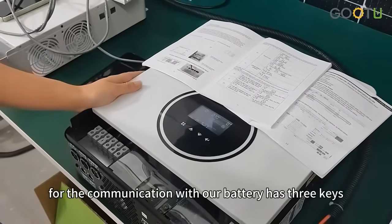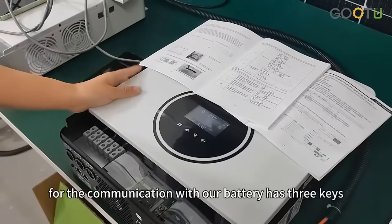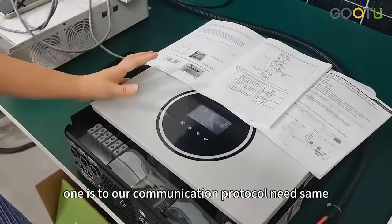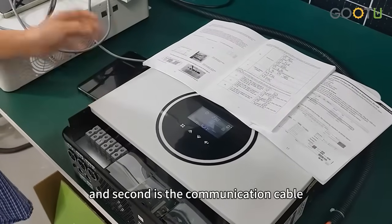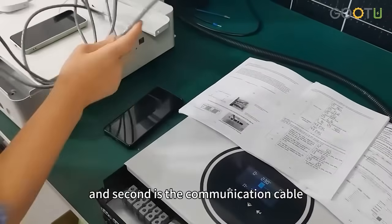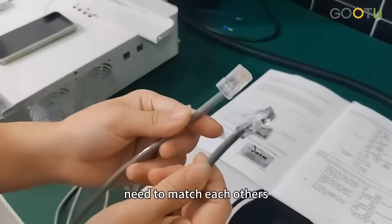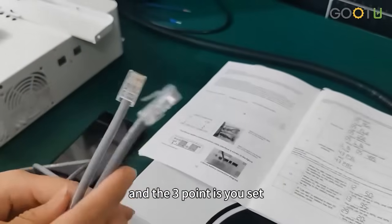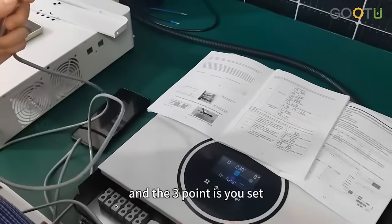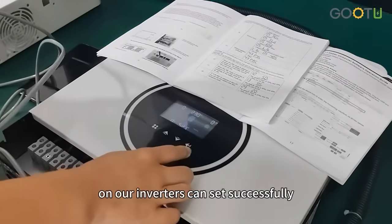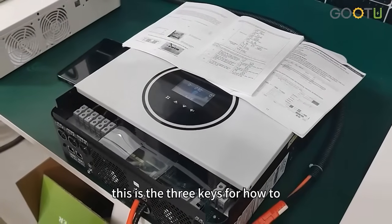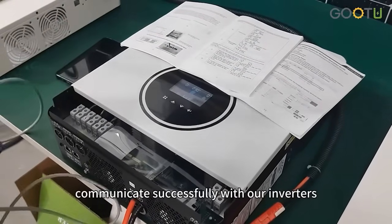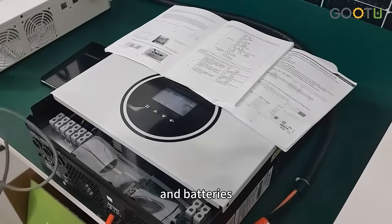For communication with our battery, there are three keys: one is our communication protocol needs to sync, second is the communication labels need to match each other, and the third point is you set on our inverters can set successfully. These are the three keys for how to communicate successfully with our inverters and batteries.